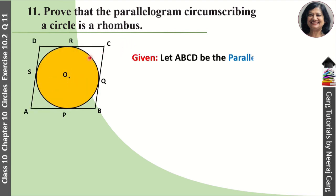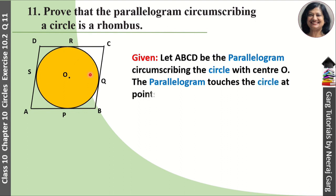Given: Let ABCD be the parallelogram circumscribing the circle with center O. The parallelogram touches the circle at points P, Q, R and S. To prove: ABCD is a rhombus. For proving rhombus, we need to know the rhombus property and the relation between rhombus and parallelogram.